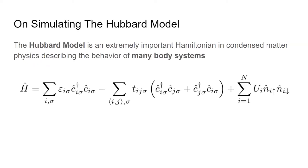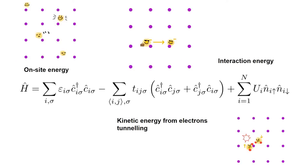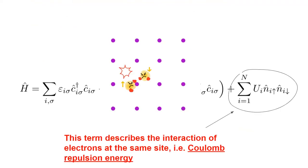One really important Hamiltonian that we want to study with the dopant array system is the Hubbard model, which is a ubiquitous Hamiltonian in condensed matter physics that describes the behavior of many body systems. Every term in the Hubbard model describes an important physical aspect of our system, but I want to focus my attention on the last term in the Hubbard model, which describes the energy that comes from interacting electrons at the same site. It can be thought of as the Coulomb repulsion energy term.